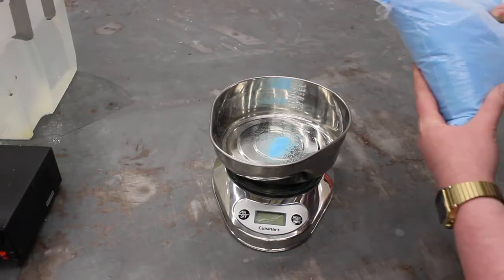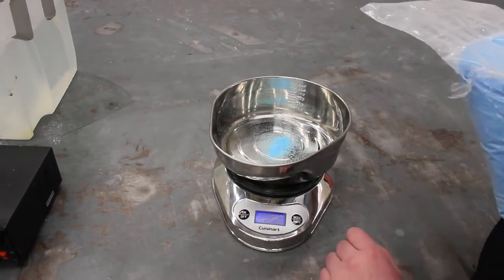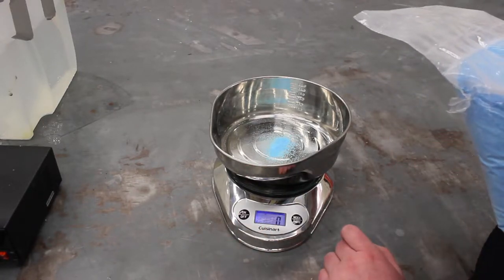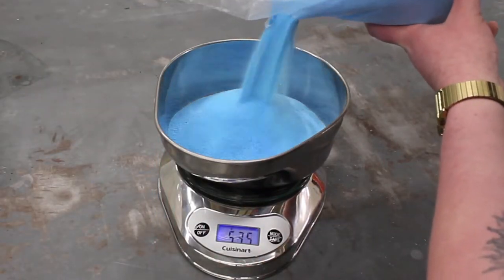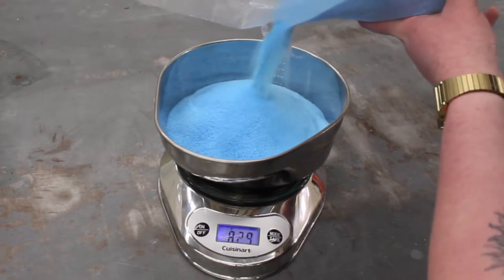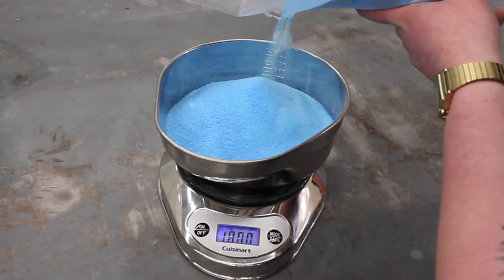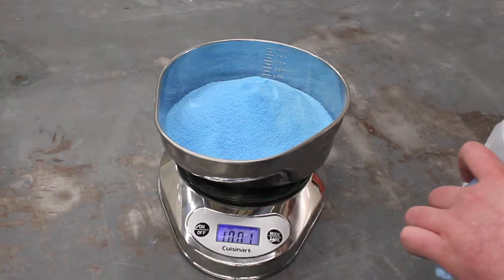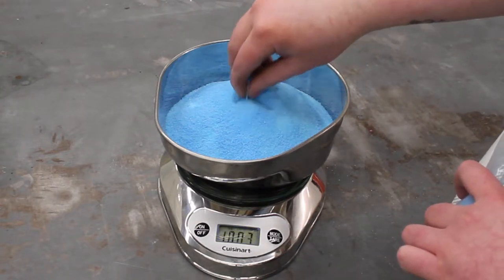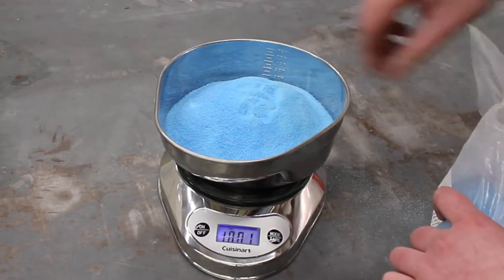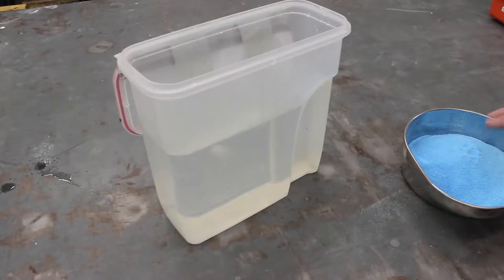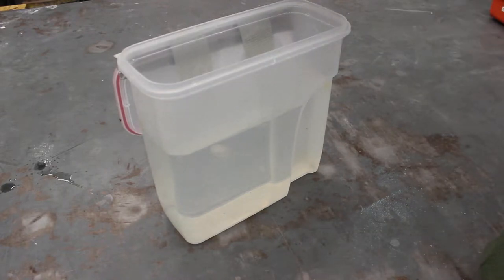Step one is measuring out the copper sulfate. Basically, you're going to need 250 grams for a strong etch to one liter of water. This container will have four liters of water, so I need approximately a thousand grams. I'm using a kitchen scale. You can find these at Target, Walmart, or Amazon. They're not expensive at all.